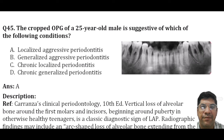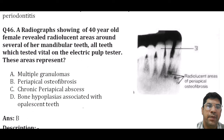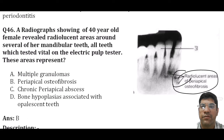A radiograph of a 40-year-old female reveals a radiolucent area around several of her mandibular teeth, all tested vital on electronic pulp test. This represents periapical osteofibrosis — a condition in which there are radiolucent areas in the bone surrounding the teeth showing no sign of pulp involvement or infection.